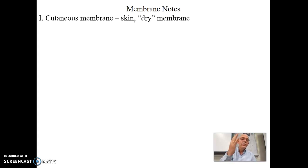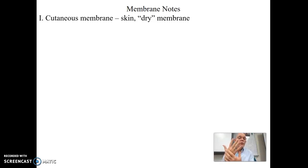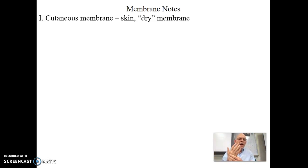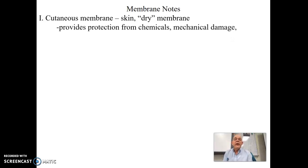The first type of membrane is the cutaneous membrane — that's just your skin. You may have heard the word 'subcutaneous fat'; sub means below, so that's the fat below your skin. The cutaneous membrane is a dry membrane — it's the only dry membrane we have. It can secrete oils and sweat, but for the most part it is considered dry, unlike the other membranes we'll discuss.